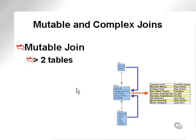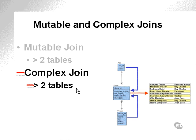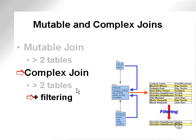So a mutable join is a join between multiple tables. A complex join is a form of a mutable join, except that it has additional filtering.